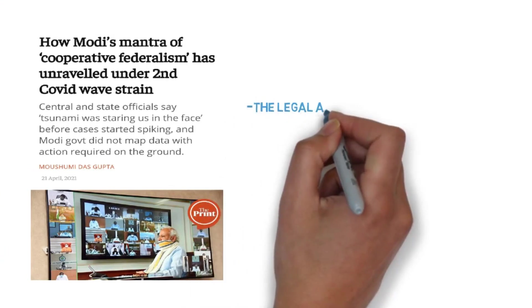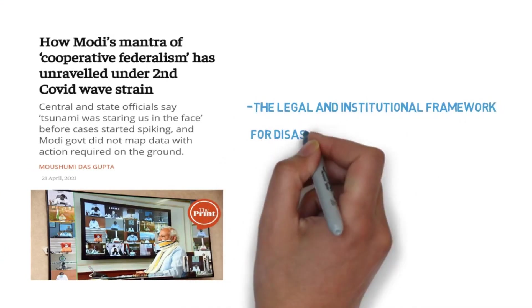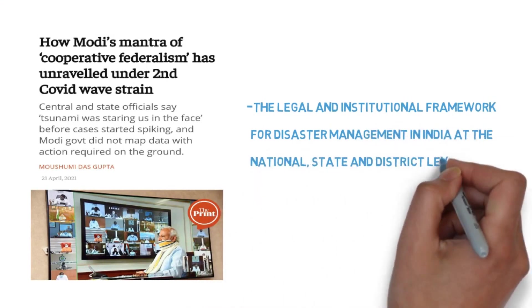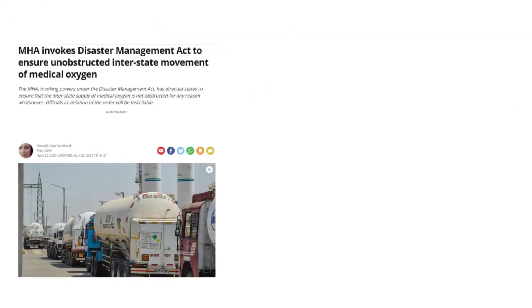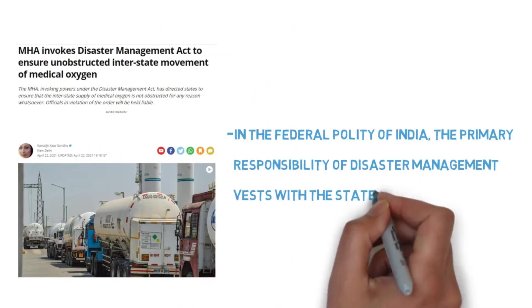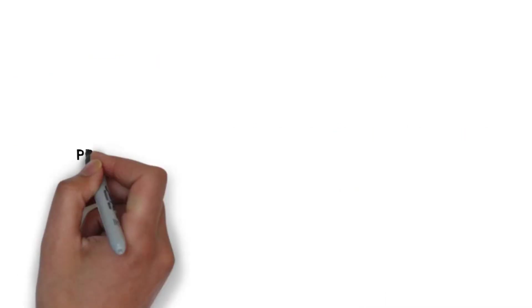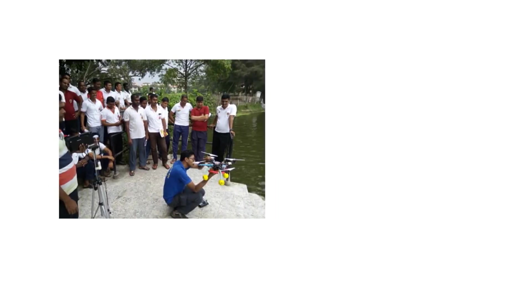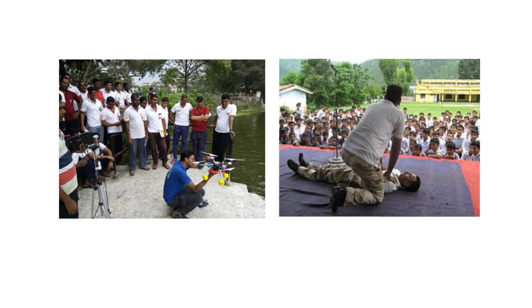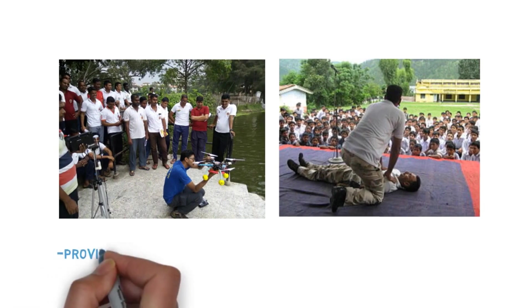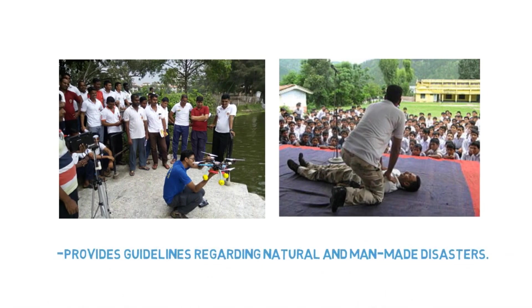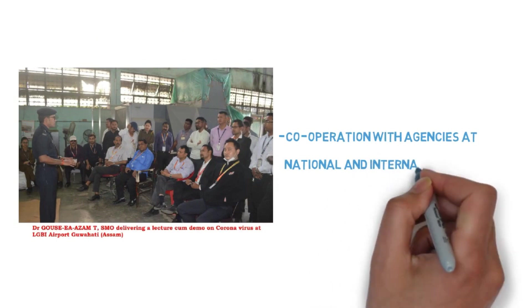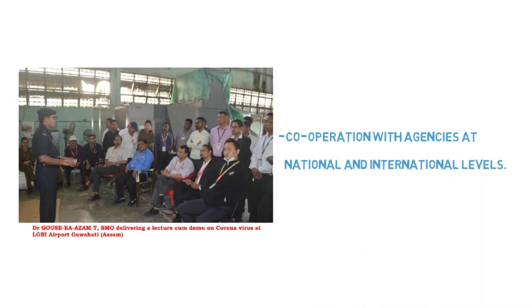This act has provided the legal and institutional framework for disaster management in India at all three levels: district, state, and national level. In the federal structure of India, the primary responsibility under this act lies with the state government. Progress and achievements have been made — it runs intensive earthquake and extreme weather event awareness campaigns, provides guidelines regarding natural and climate change risks, and cooperates with agencies at national and international levels to save human lives.